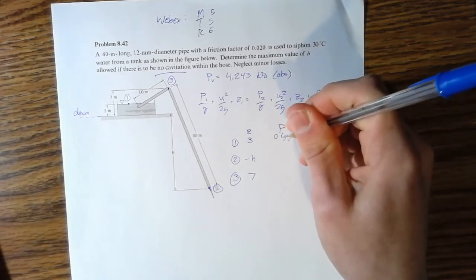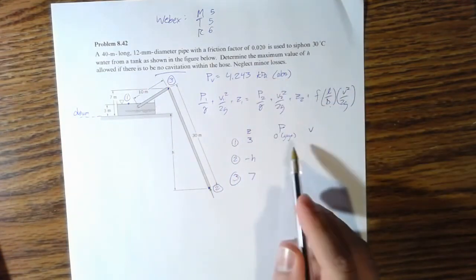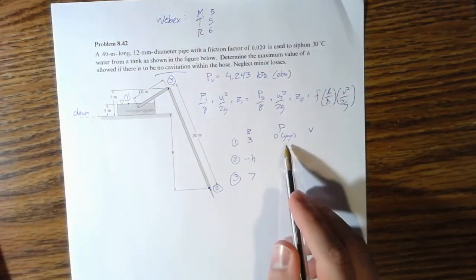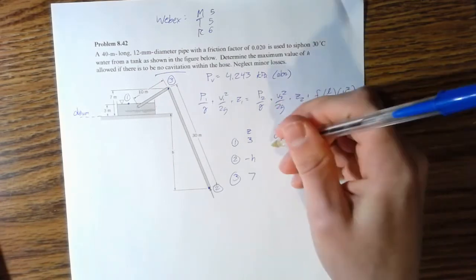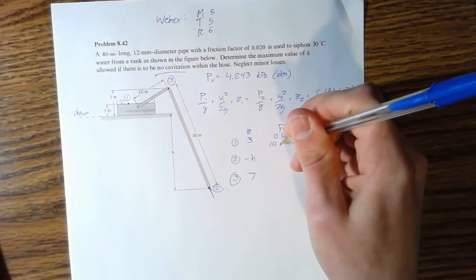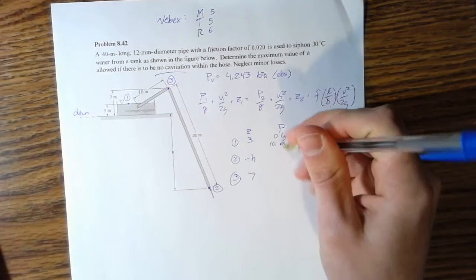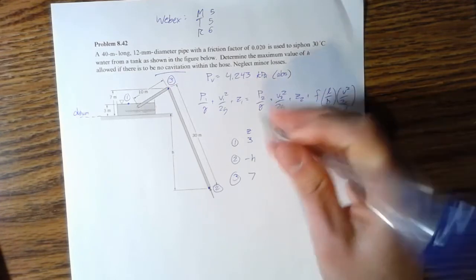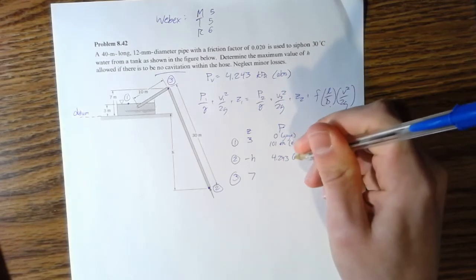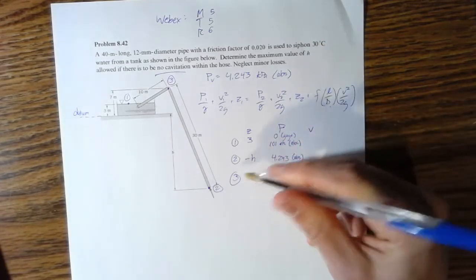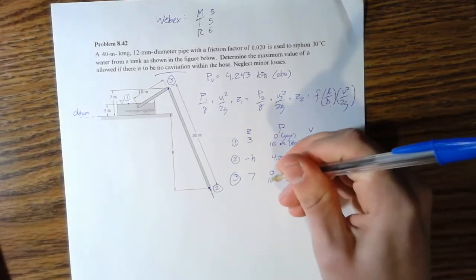Pressure at point 1 is zero for gauge. Since that's an absolute pressure, I'm going to also list point 1 as 101 kilopascals absolute. Pressure at point 2 is going to be our pv, 4.243 absolute, and point 3 is going to have the same pressure as point 1, which is zero gauge or 101 absolute.